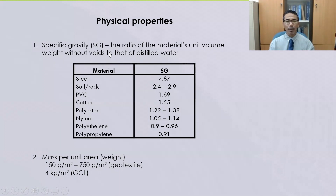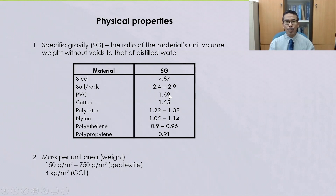This table tabulates some values of specific gravity for various materials. Steel is approximately 7.87. Soil or rock ranges from about 2.4 to 2.9, though peat will be much lower. PVC has a specific gravity of 1.69, cotton is 1.55, and other polymeric materials include polyester, nylon, polyethylene and polypropylene. If we look closely at the values for polymeric materials, they are all lower than 2.0.